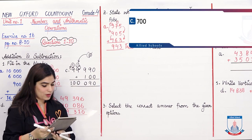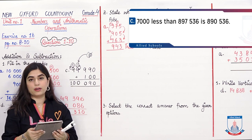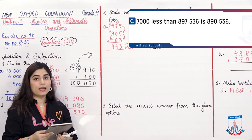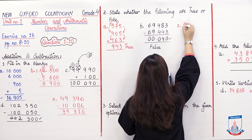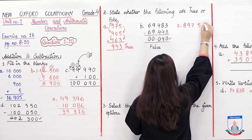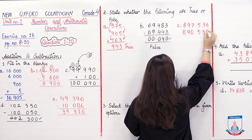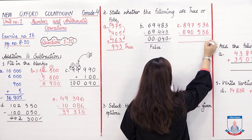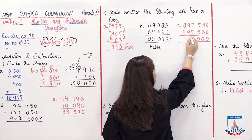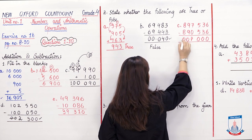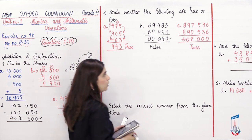Part C: 7,000 less than 897,536 is 890,536. We subtract to find the difference: 897,536 minus 890,536. The ones, tens, hundreds digits cancel. 7 minus 0 is 7, and the remaining digits cancel. The difference is 7,000. Yes, the answer is 7,000, so this statement is TRUE.